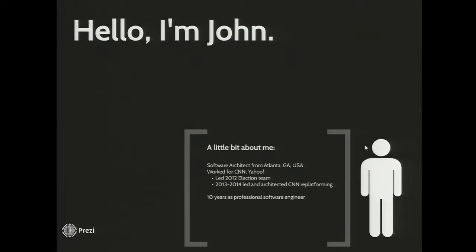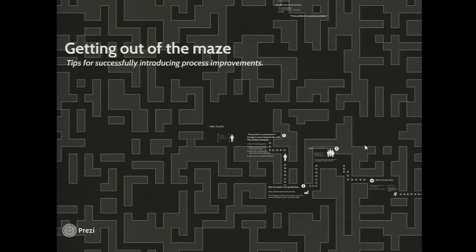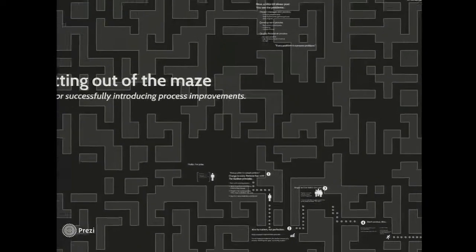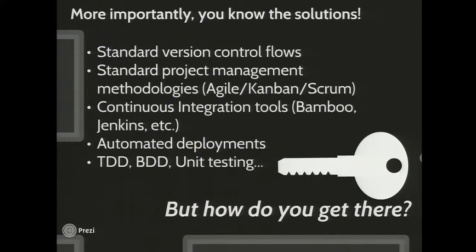That was a great talk to follow. Let's get started. Hi, my name is John. I'm a software engineer and architect from Atlanta, Georgia. I used to work for CNN and Yahoo, led a few big teams there. My talk is called 'Getting Out of the Maze: Tips for Introducing Process Improvement.' So you're engineers, and we're all the kind of people who see problems. If you're in this room, you probably see a problem on your team with project management, the development process, or maybe your quality assurance process. You know the solutions — you need standard version control flows, you should be using Git, maybe Jenkins for continuous integration, maybe you want to implement TDD. But the question is, how do you get there?